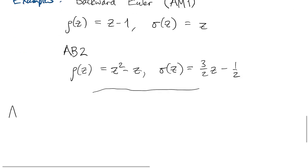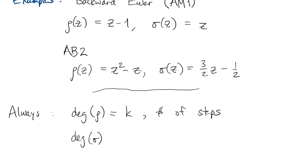So for every method, there are some simple properties. The degree of the rho polynomial is equal to k, which is the number of steps. The degree of sigma is also equal to k if the method is implicit, and it's less than that if the method is explicit.